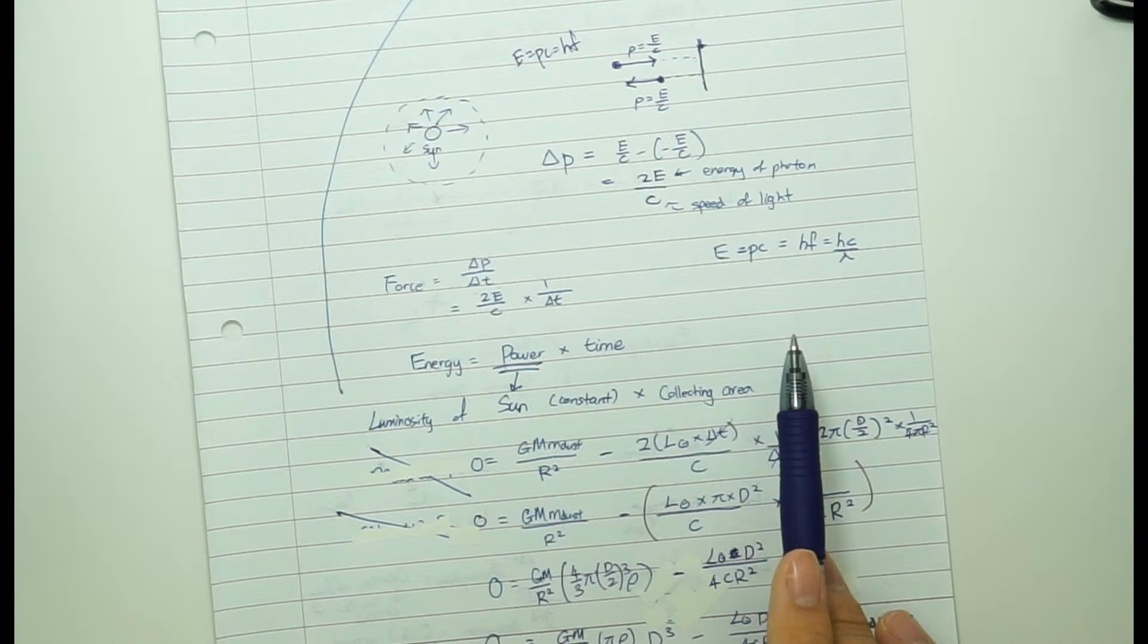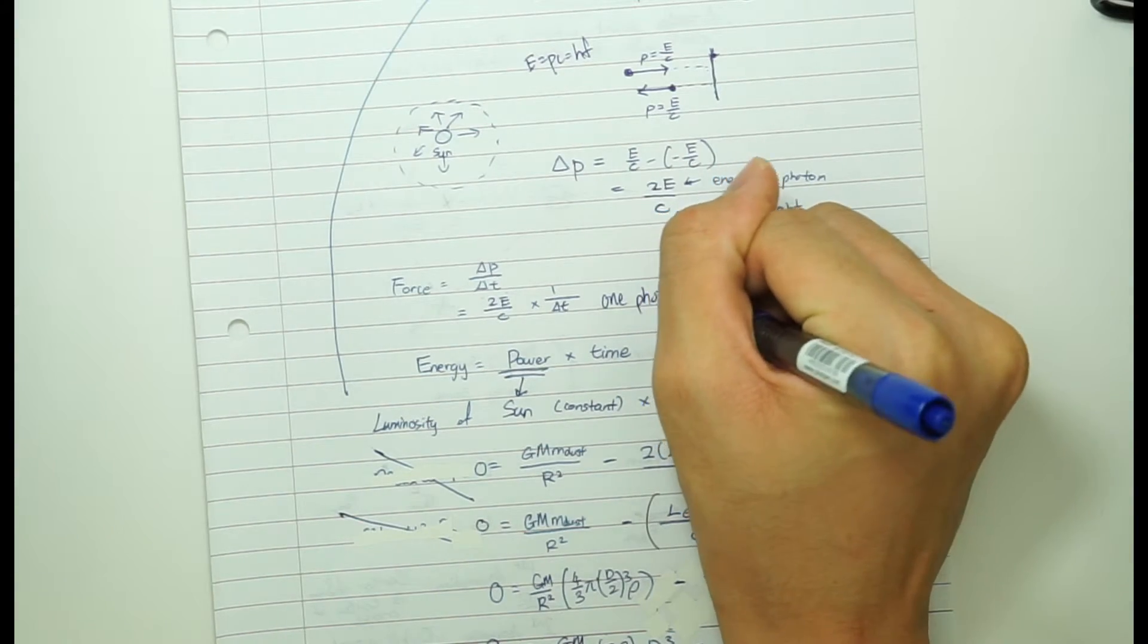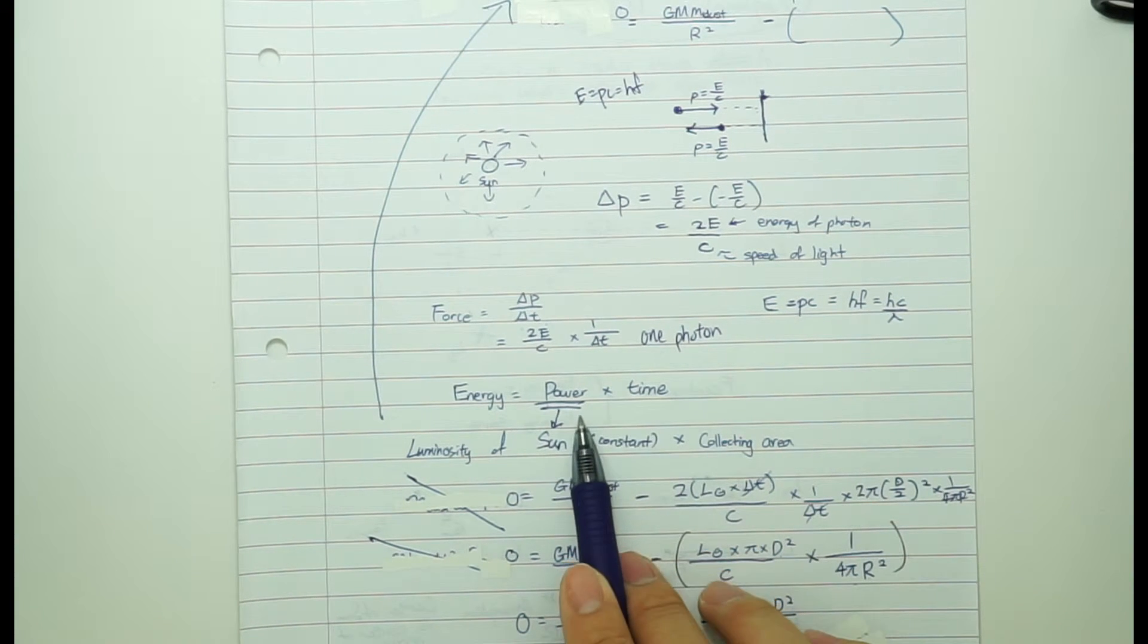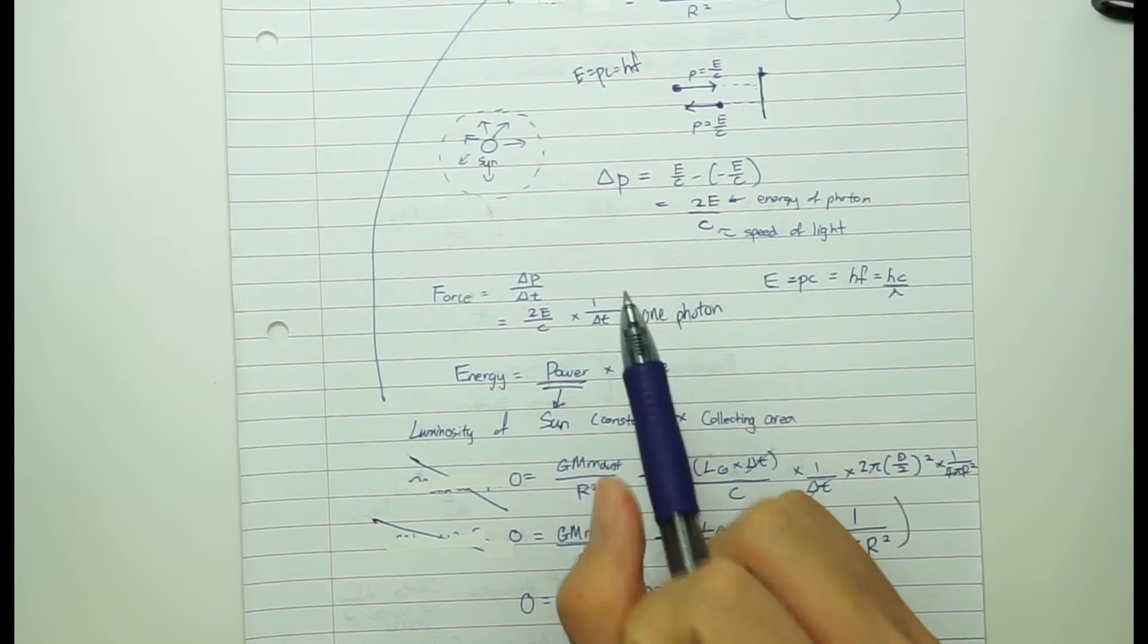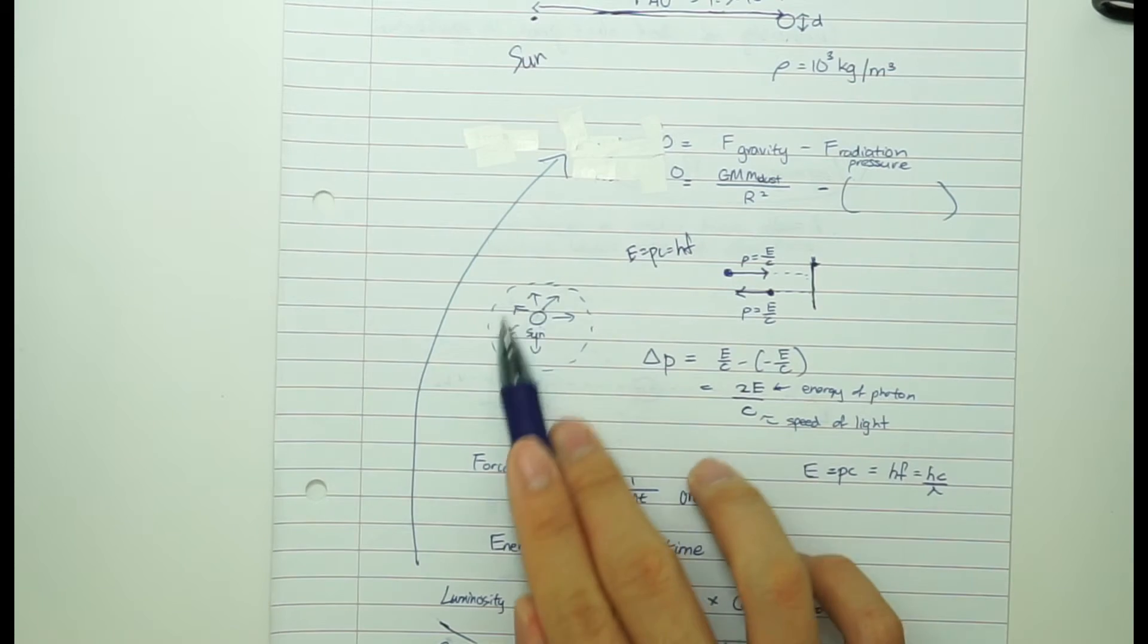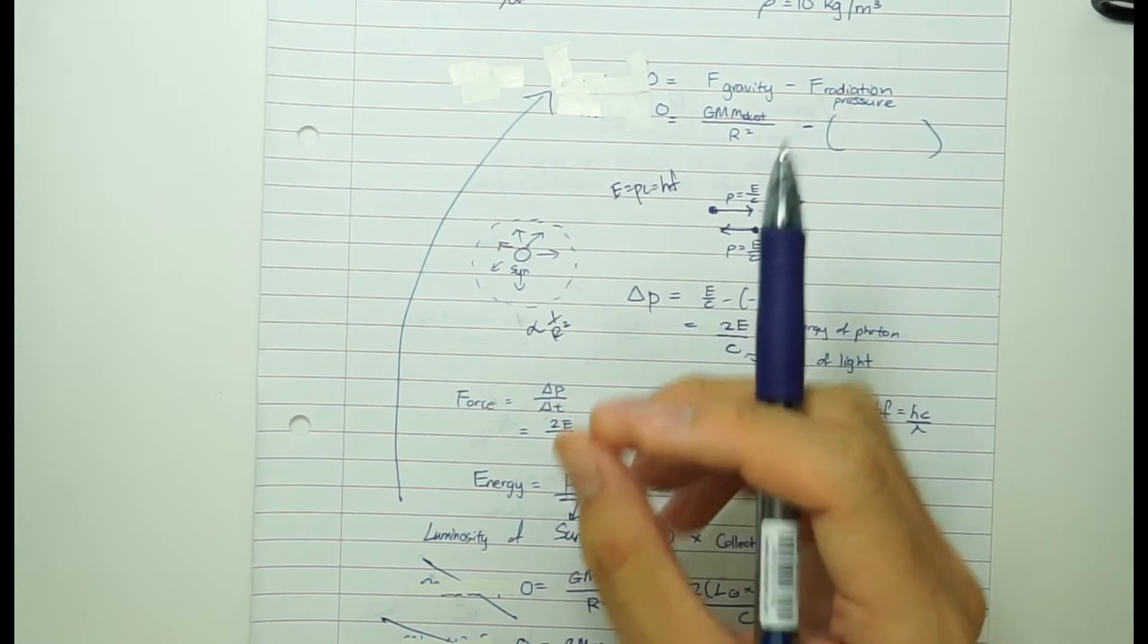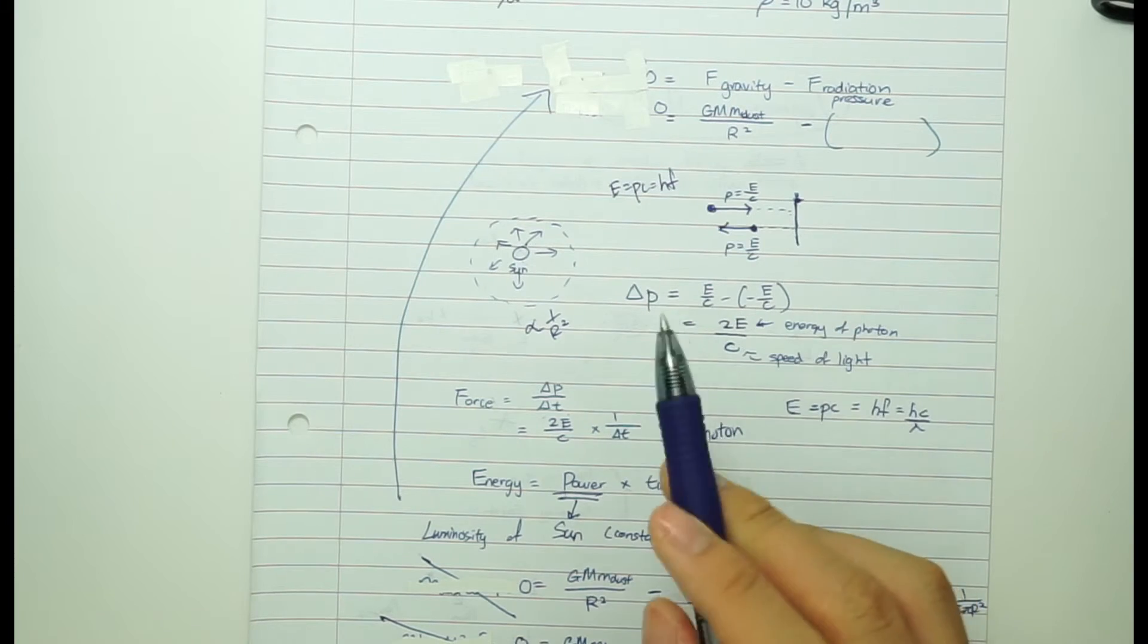And so, we want to calculate force. Force is just change in momentum over change in time. So you can get 2E over C which is change in momentum times 1 over change in time. So what we do next is we use our formula for radiation pressure. We substitute back into this equation. And then we can use this equation, energy equals power times time. So basically, we know that this is the force exerted by one photon. So what we want to do is we have to find number of photons. And since we know the energy of each photon, we can calculate the number of photons per unit time by using the power of the sun which is solar luminosity. Then we also multiply it by the fractional collecting area because the dust grain is so small and so far away.